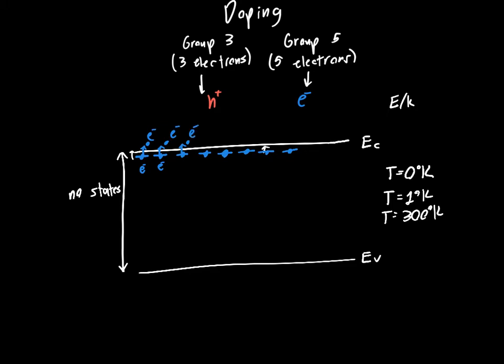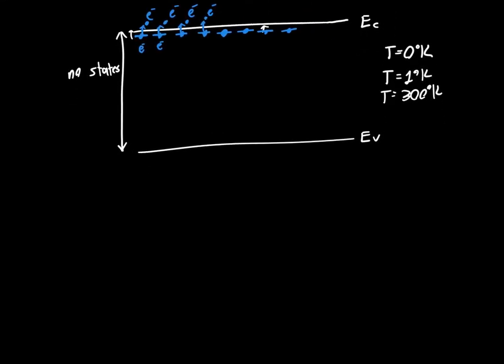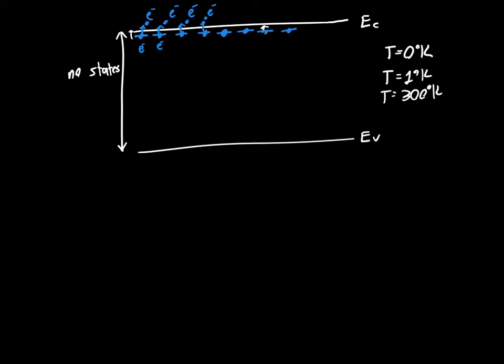Similarly, if we dope the semiconductor with a group three semiconductor, we've got our conduction band and our valence band. We've got a bunch of empty states here.